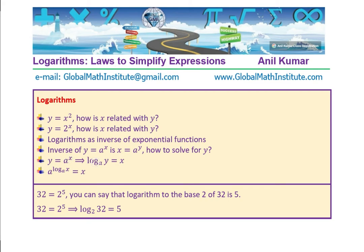You could write in exponential form or logarithmic form and simplify. A to the power of log base a of x is just x. For example, 32 equals 2 to the power of 5 in exponential form. You can say logarithm base 2 of 32 is 5. These two statements are equivalent.